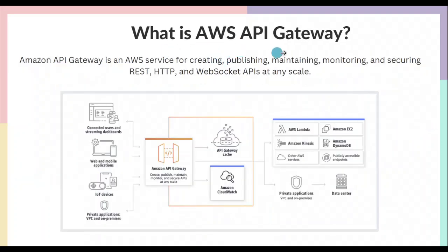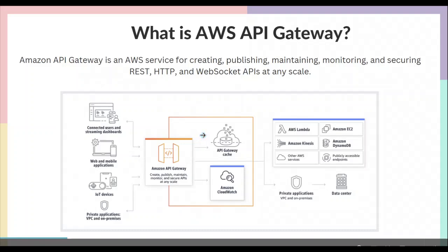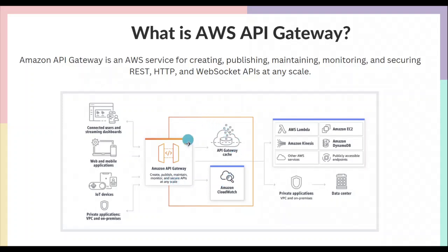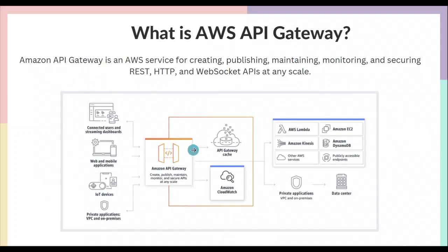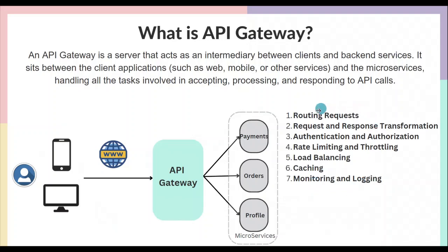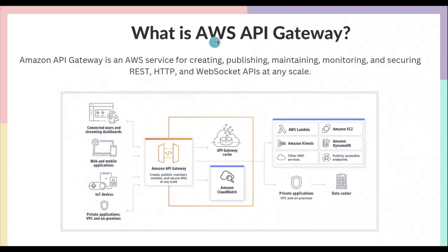Amazon API Gateway is a managed service for API Gateway. All those functions we discussed — if you were setting up your own API Gateway server, you'd have to implement all of them yourself. With AWS API Gateway you get all of this out of the box and can instantly build your APIs without worrying about those functionalities. It's an AWS service for creating, publishing, maintaining, monitoring, and securing REST, HTTP, and WebSocket APIs at any scale — it can automatically scale up and down to handle huge workloads.